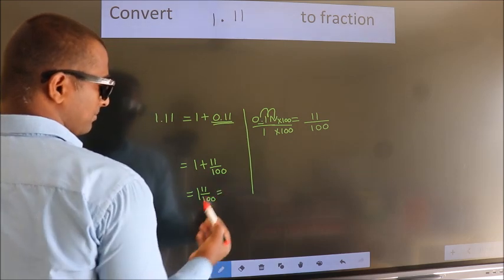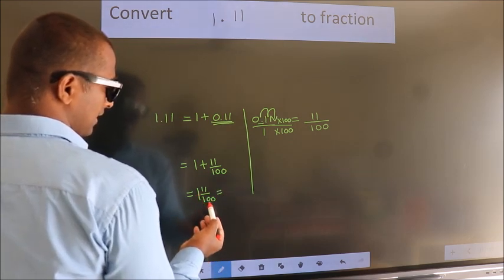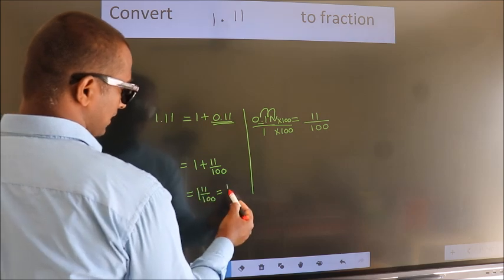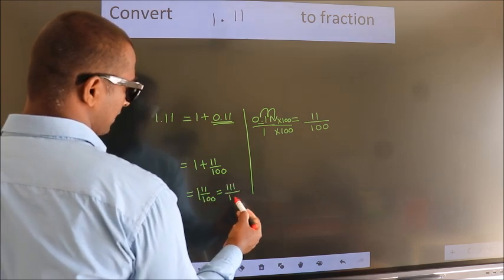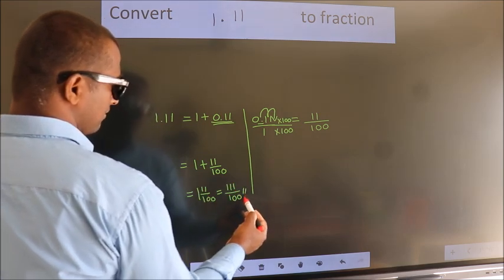And in the improper fraction, 1 into 100, 100 plus 11, 111 by 100 is our fraction.